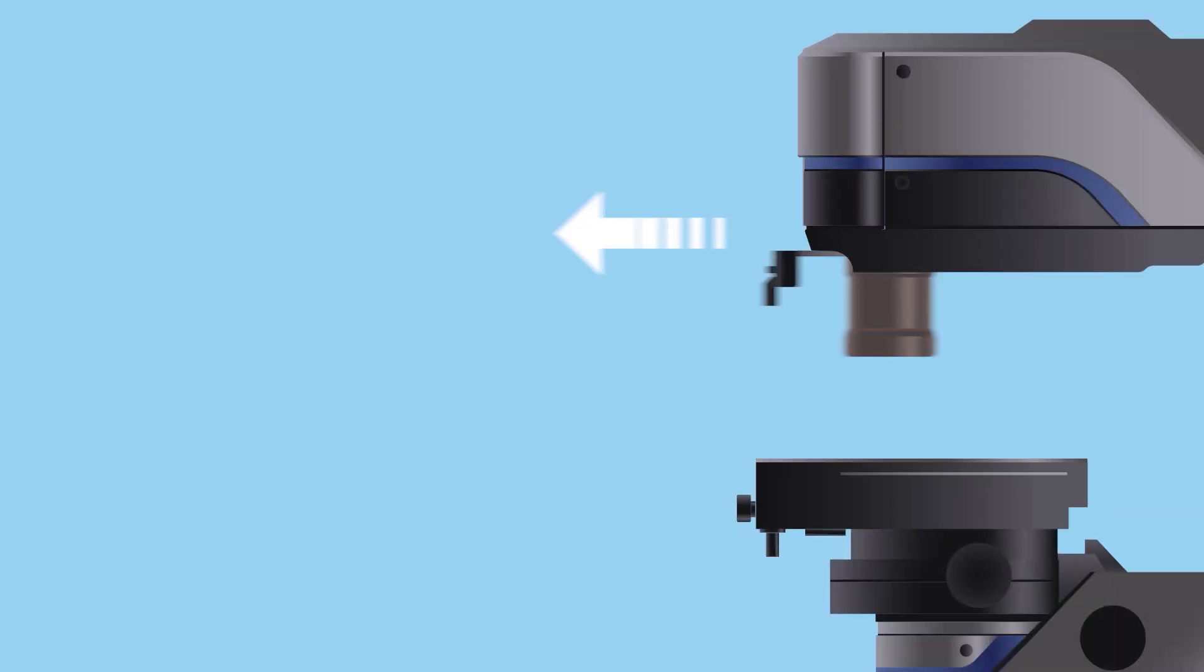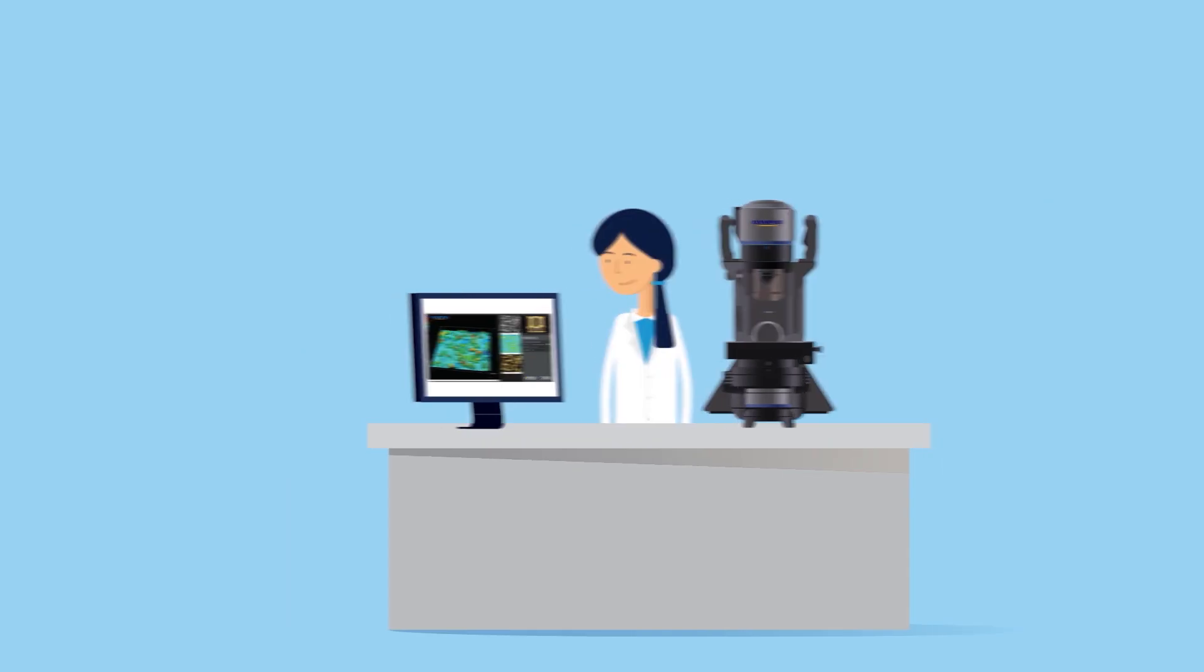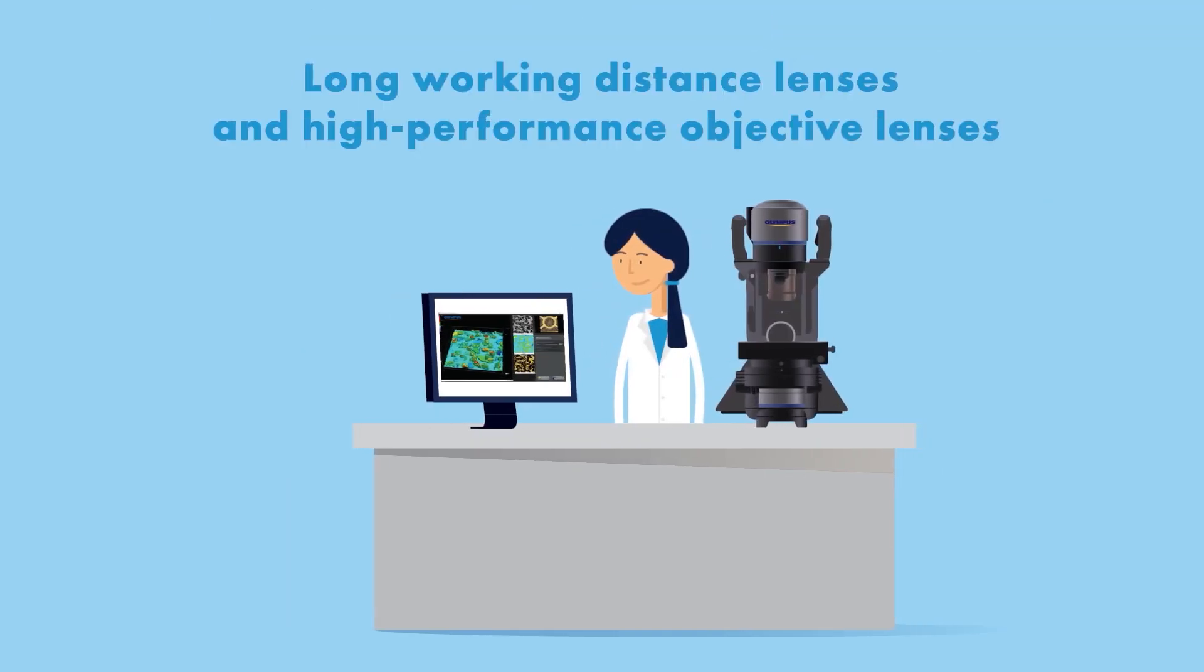A wide range of objective lenses lets you see the whole picture, while quick change lenses mean you can change magnifications in seconds rather than minutes. Olympus offers both long working distance lenses and high performance objective lenses, allowing you flexibility across all your applications.